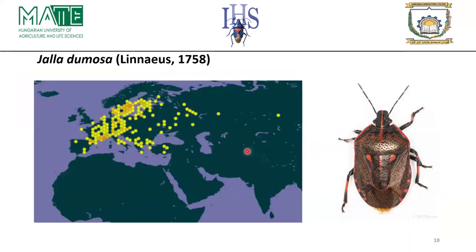Another European species is Zicrona domosa, which is mainly found in Europe with some occurrence in the southern part of Russia. This slide shows the geographical distribution of Zicrona domosa in Europe.